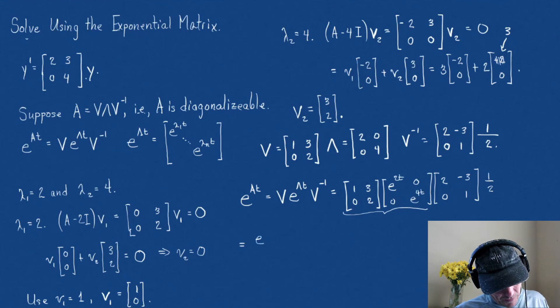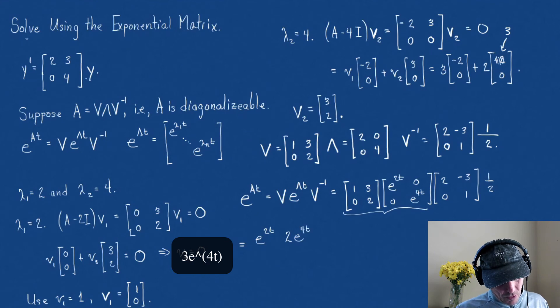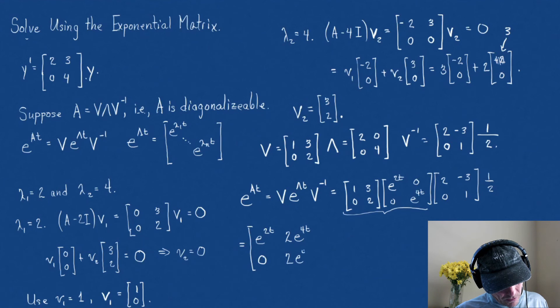So, I'm going to get an E to the 2T, so that's row 1, column 1. Row 1, column 2 is going to be 2E to the 4T. Row 2, column 1 is going to be 0. Row 2, column 2 is 2E to the 4T. And then we have to multiply by V inverse 2, 0, minus 3, 1, times 1 half.